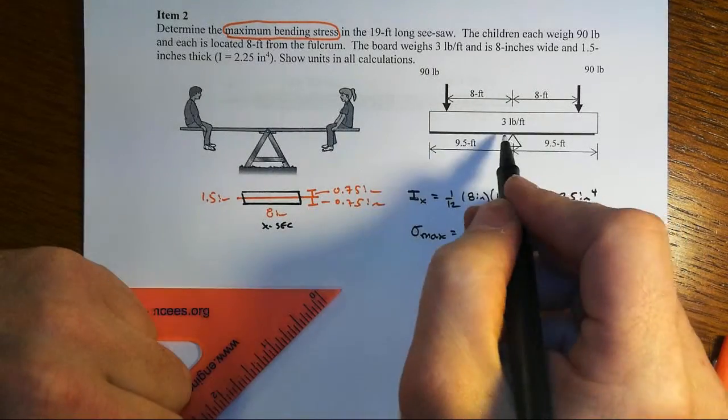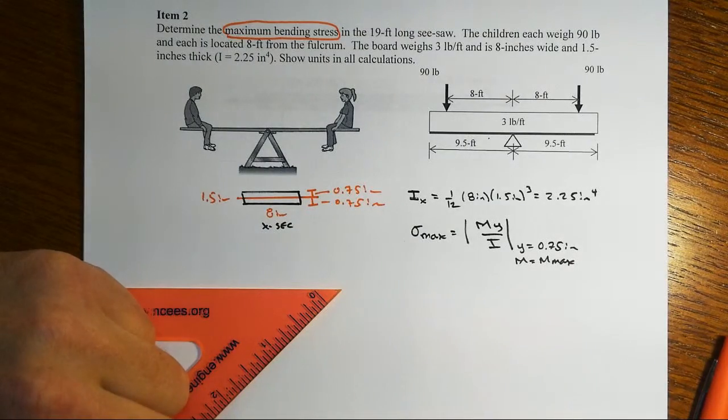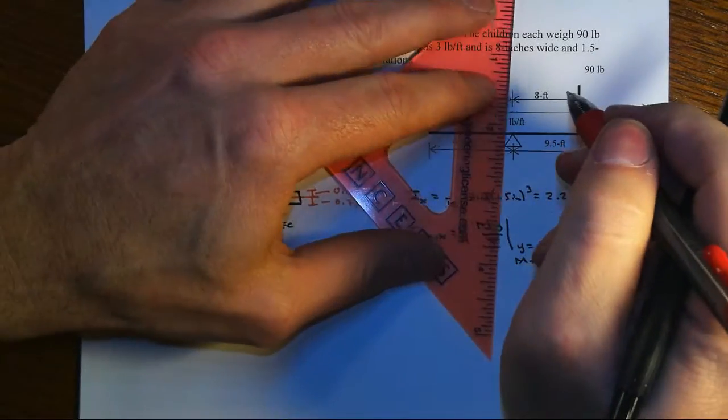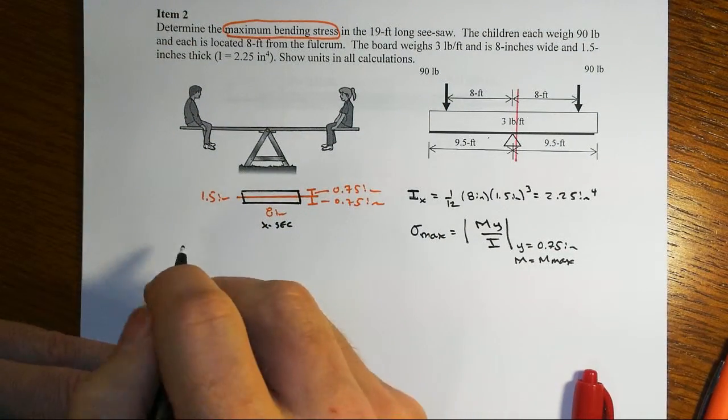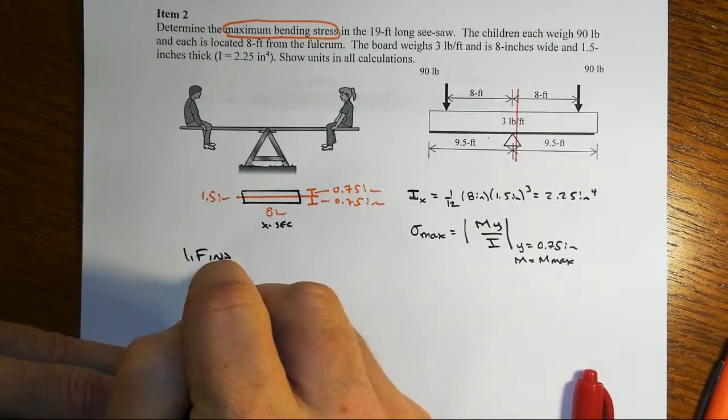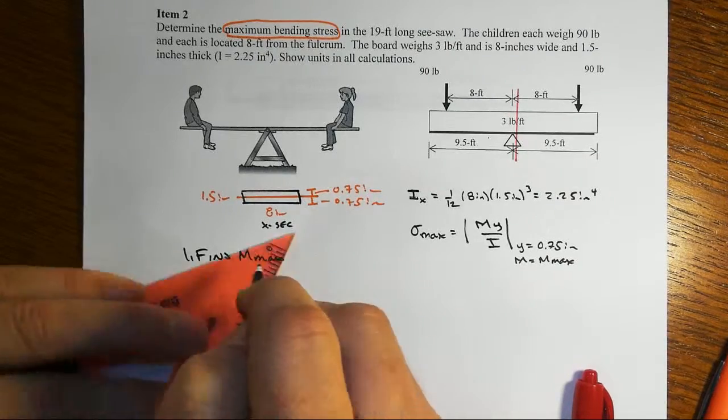And so with effectively two cantilever beams here, we can go either to the right or to the left. Let's go just to the right of the fulcrum for our cut, and we will find our maximum moment located there.